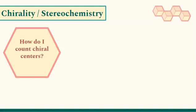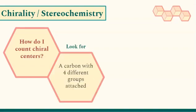Hi everyone. In this video, I'm going to answer the question: how do I count chiral centers? What we're going to be looking for is a carbon with four different groups attached to it. That's what a chiral center is going to look like.